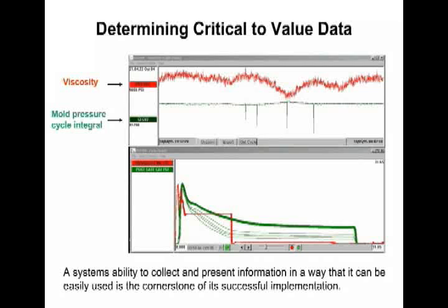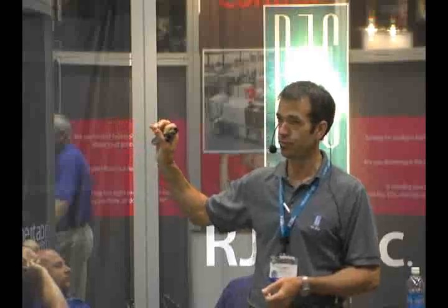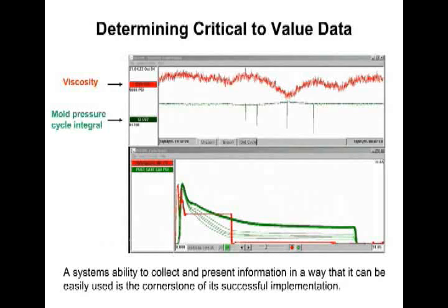Once we have gathered our data, the tool can be used during the DOE phase to help understand what data correlates to the part characteristics. Whether or not you have pressure transducers in the mold, you always want to pay attention to material viscosity — know what it's doing all the time. It's a critical variable that will influence part characteristics. In this example, we're looking at a mold cavity pressure transducer as well. This is 1,499 cycles on this trend chart — about 13 hours of run.